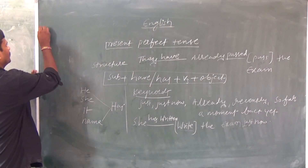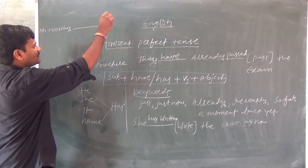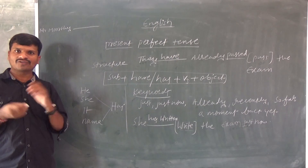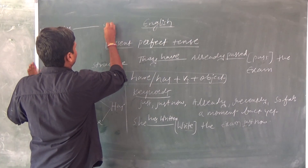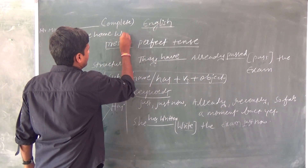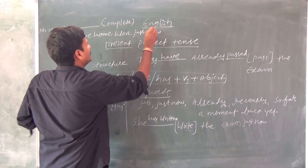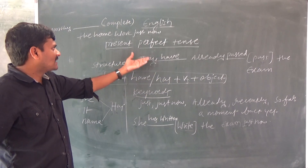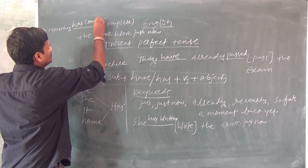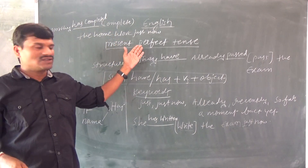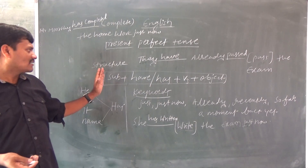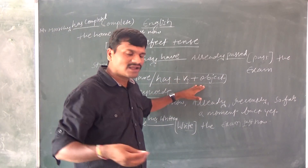One more example: Mr. Murthy completed the homework just now. Mr. Murthy is a name, so 'has' comes. So the correct sentence is: Mr. Murthy has completed the homework just now. Like this, you can make so many examples.